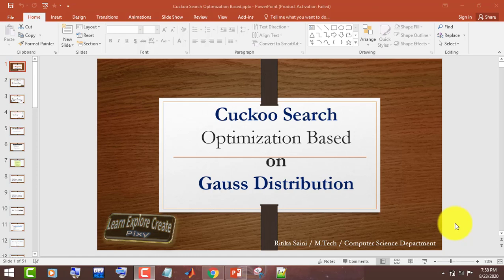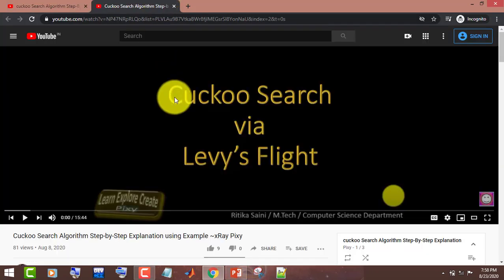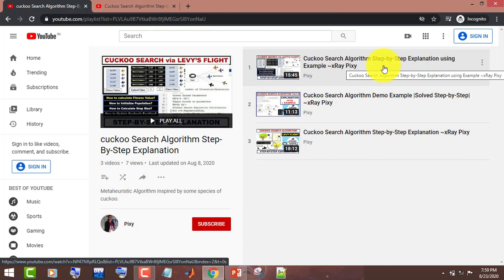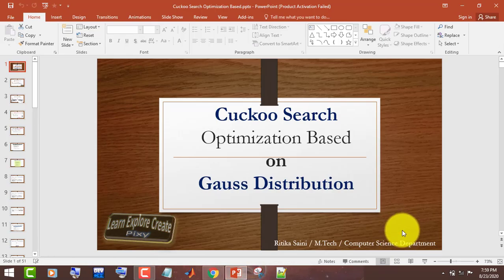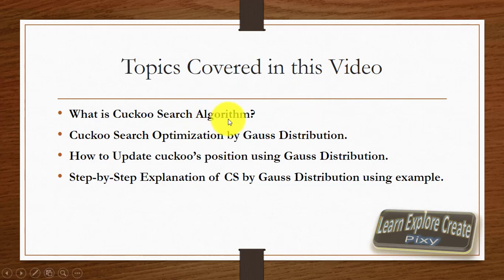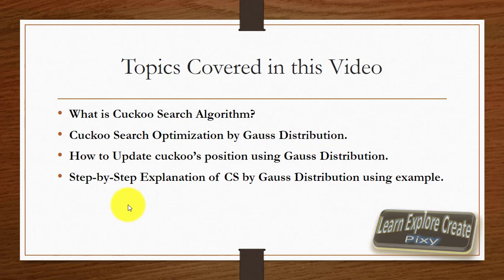In this video you will see what is Cuckoo Search Optimization based on Gauss distribution. Before, we tried this algorithm by Lévy flight; right now we are doing this by Gauss distribution. This video explains what the Cuckoo Search algorithm is all about, and I will discuss this algorithm using an example, covering how we can update the position of each cuckoo using Gauss distribution.